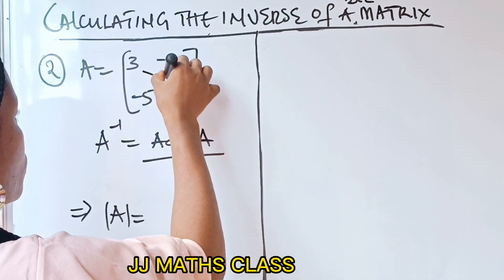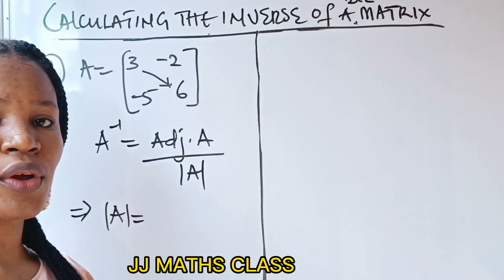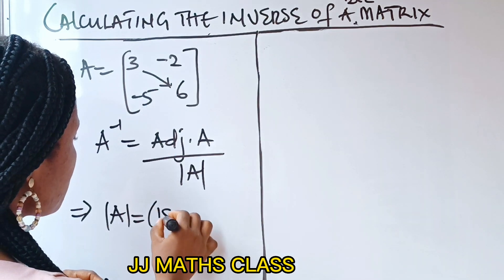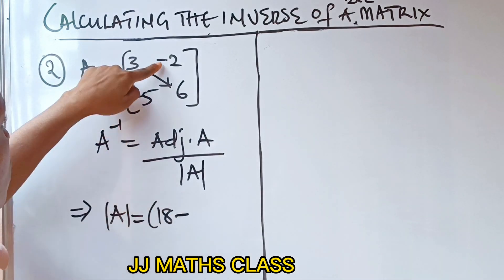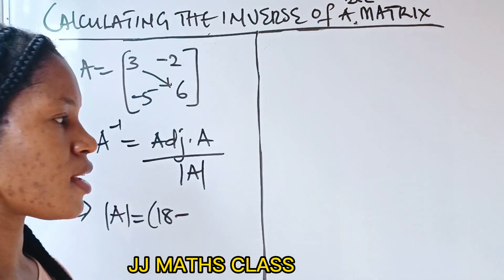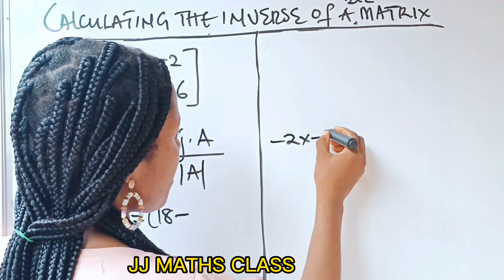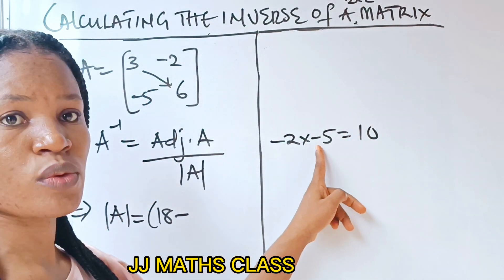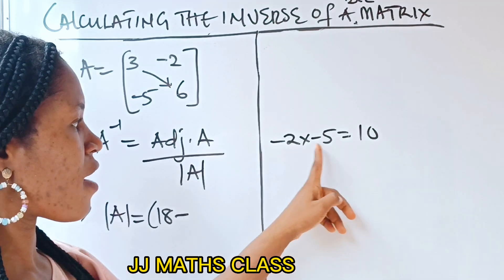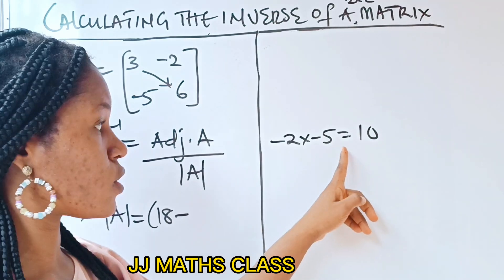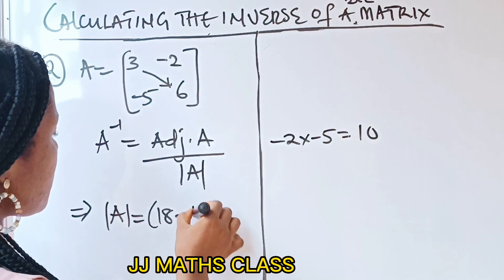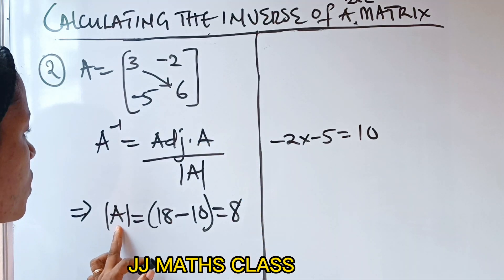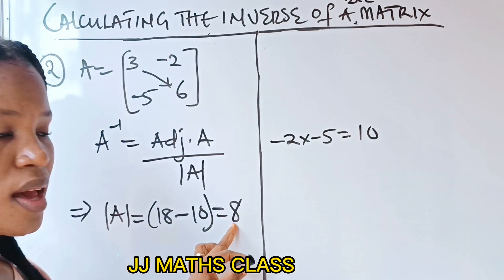As usual, multiply the elements of your leading diagonal first. So it's going to be 3 times 6, which is 18, minus 2 times minus 5. Now listen — minus 2 times minus 5 equals 10, because minus times minus gives you plus. So we have 18 minus 10, which gives us 8. We have found the determinant of A as 8.